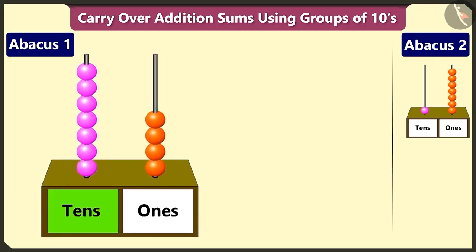in the tens box, there are 7 beads. This makes it 7 tens, that is 70. And in the ones box, there are 4 beads, which makes it 4 ones, that is 4.